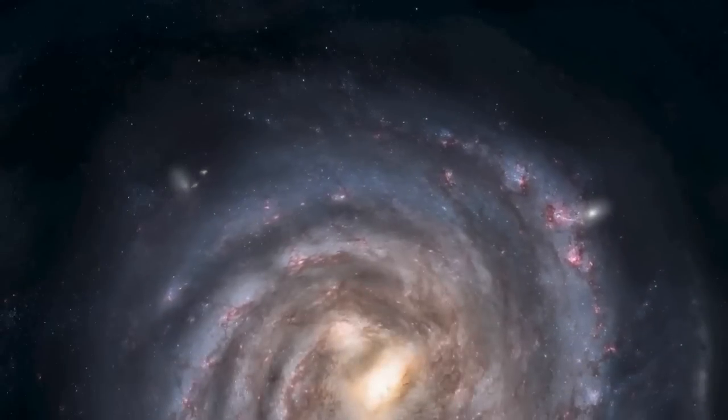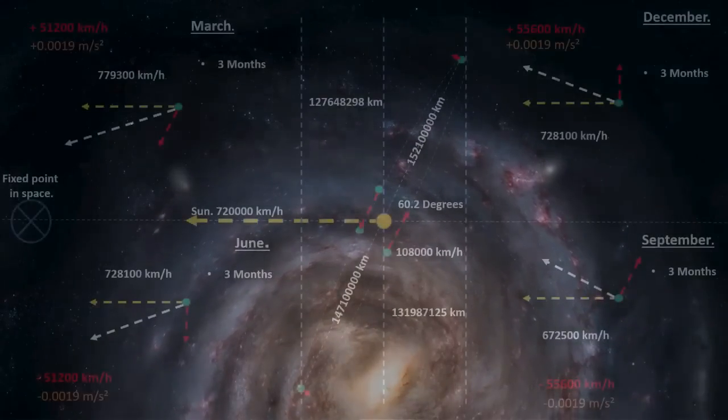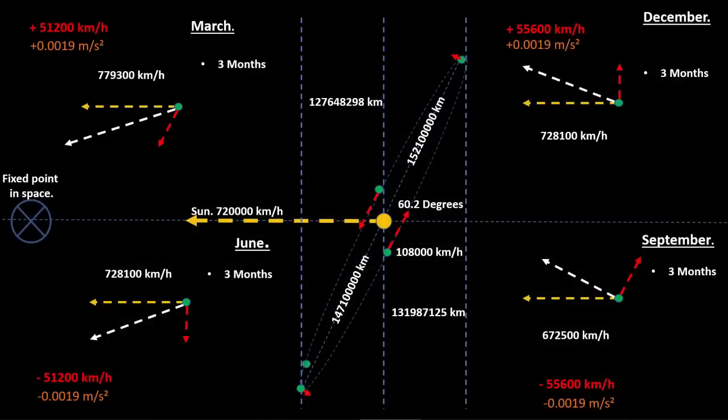On top of all the accelerations, we have more. The Sun is traveling at a constant velocity around the Universe. The Earth is going ahead and behind the Sun. The Earth itself is constantly accelerating at a changing rate.